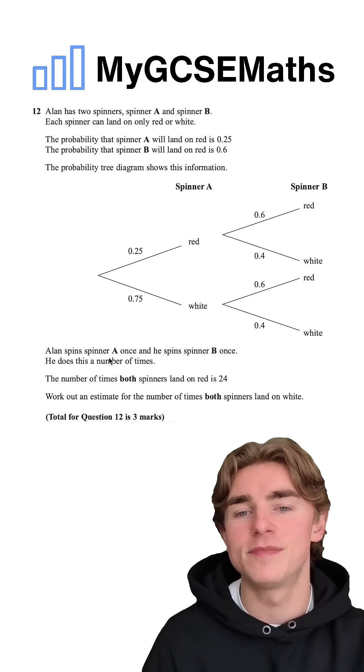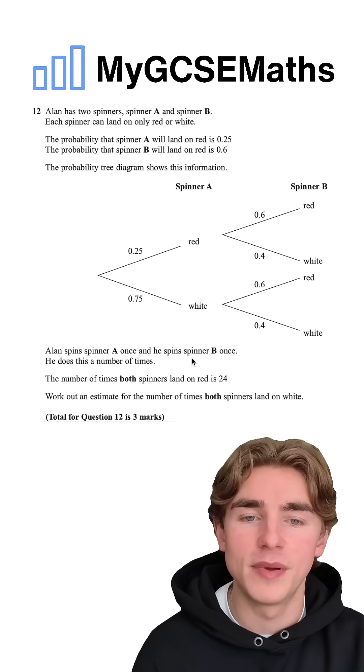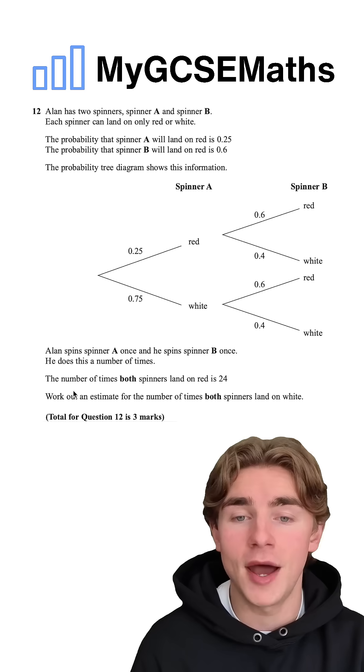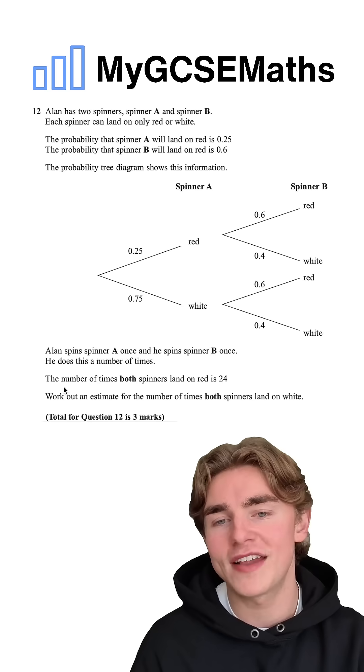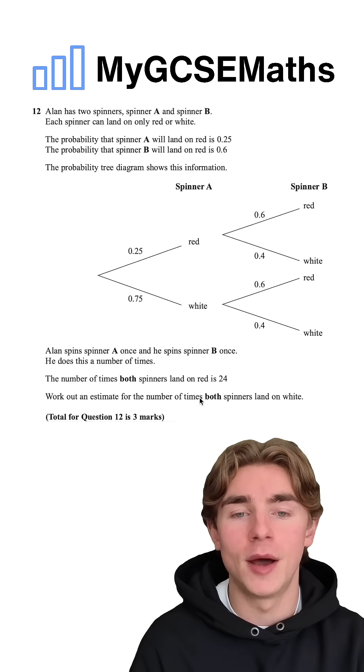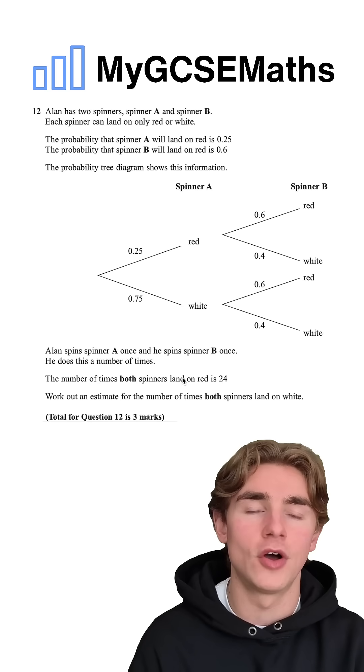It then says that Alan spins spinner A once and spins spinner B once as well. He does this a number of times, and the number of times that both spinners land on red is 24. We're asked to work out an estimate for the number of times that both spinners land on white.